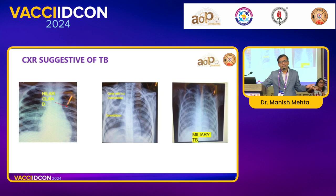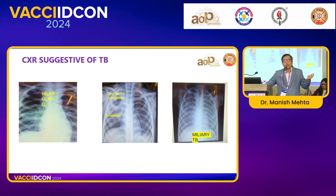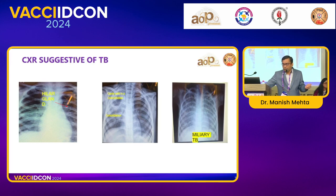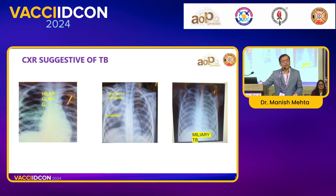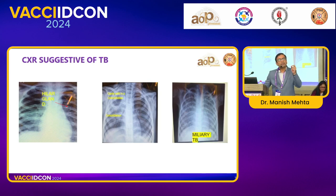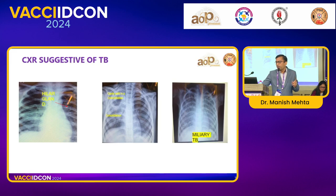If our child has a suggestive X-ray, should we start AKT? No. Microbiological confirmation is most important — not only for diagnosis, but to check whether this is rifampicin-sensitive or rifampicin-resistant tuberculosis. That's why we always do microbiological confirmation.